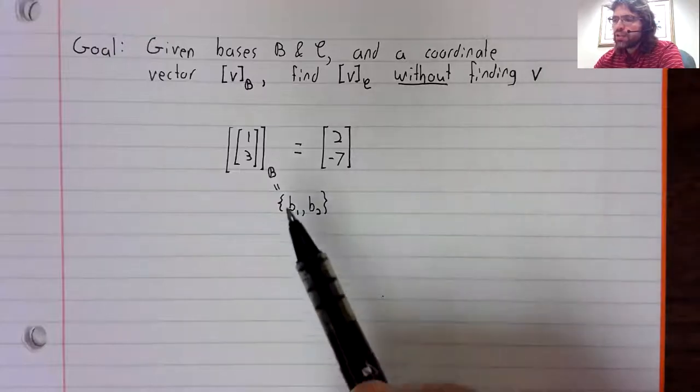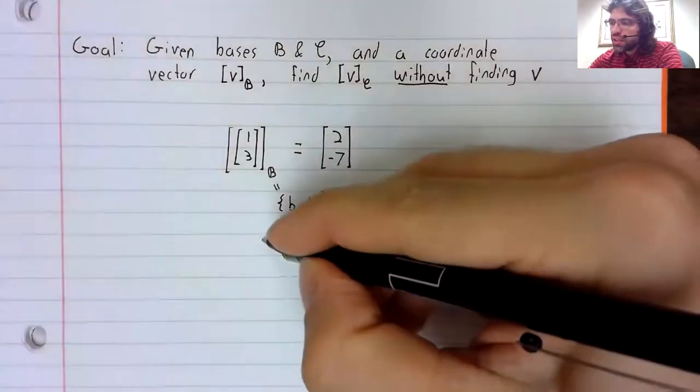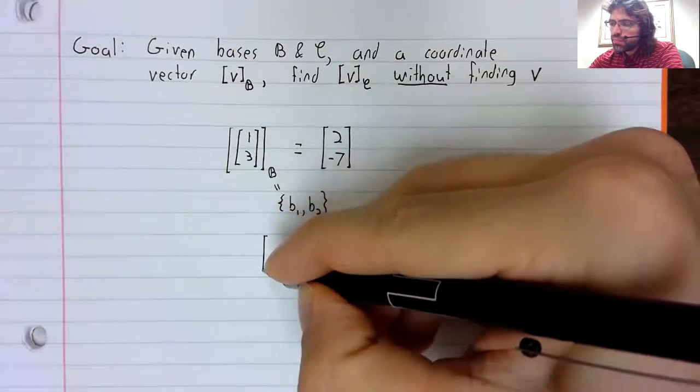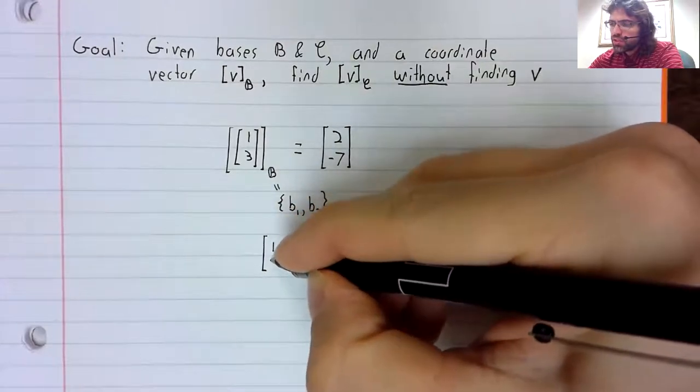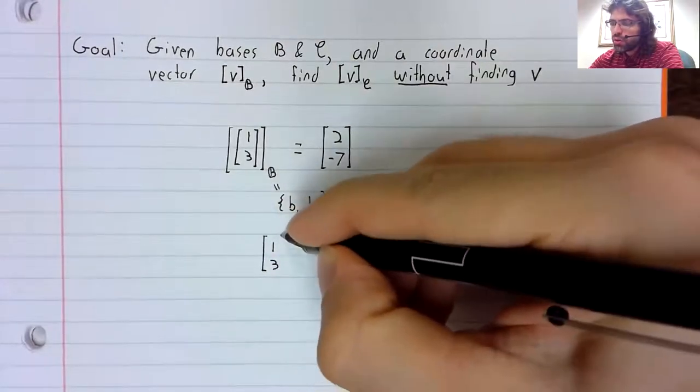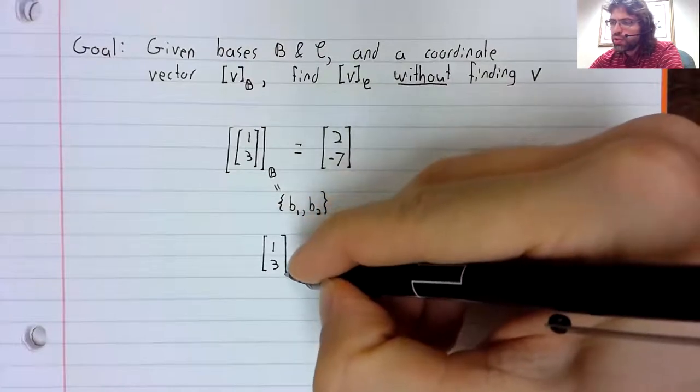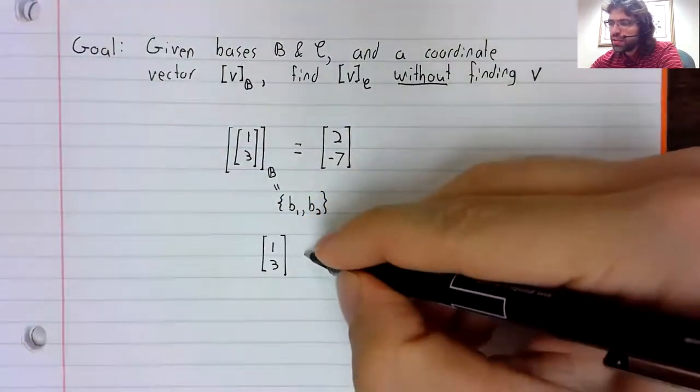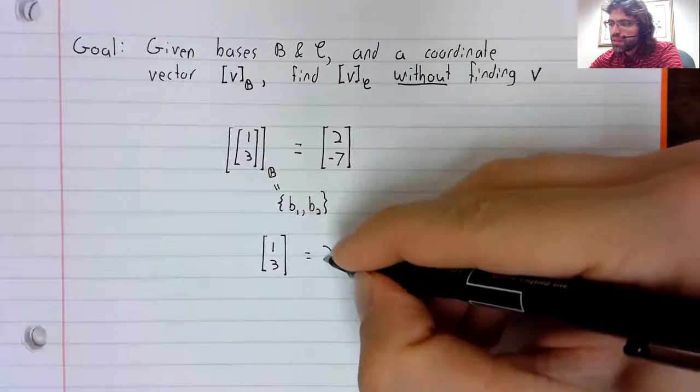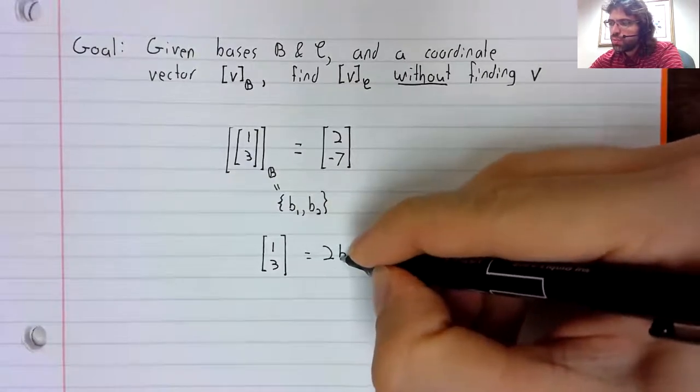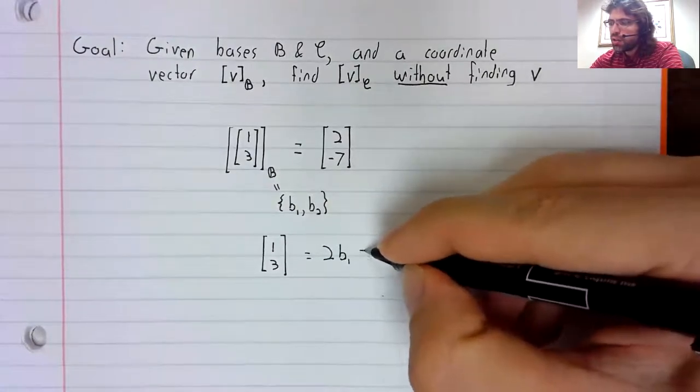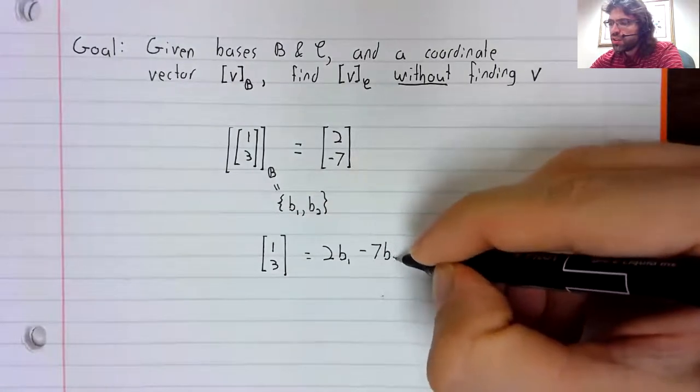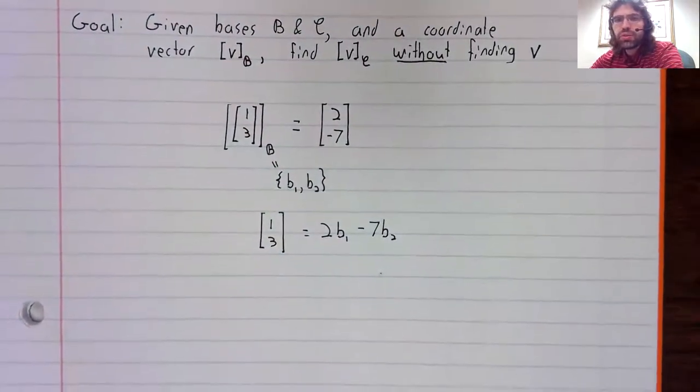And what this equality is saying is that the vector [1, 3] is 2B1 minus 7B2.